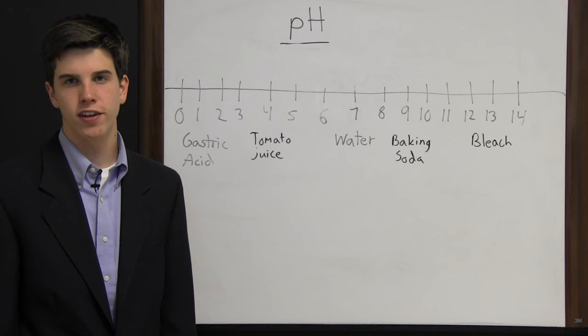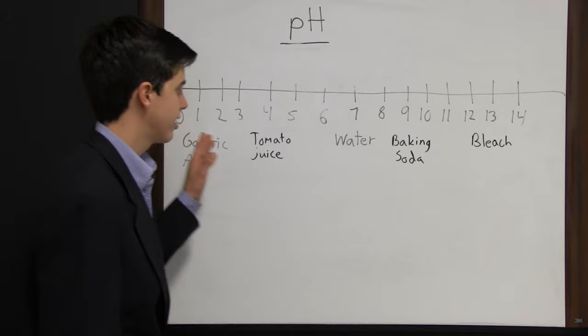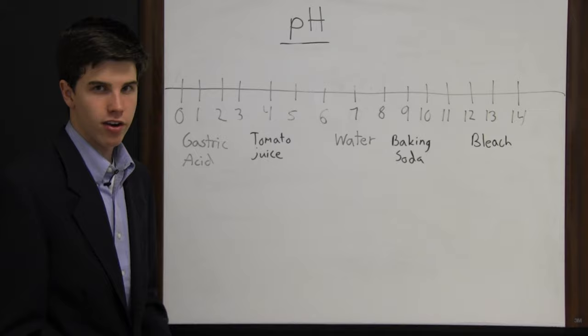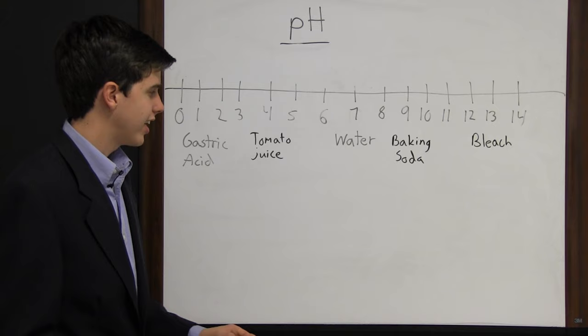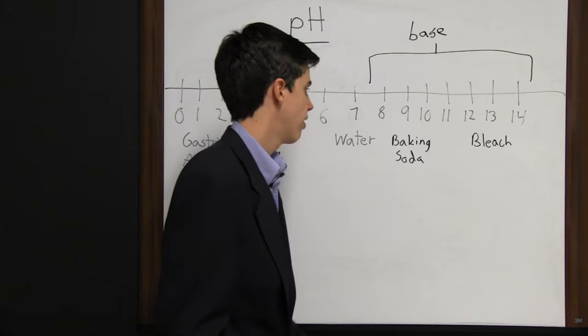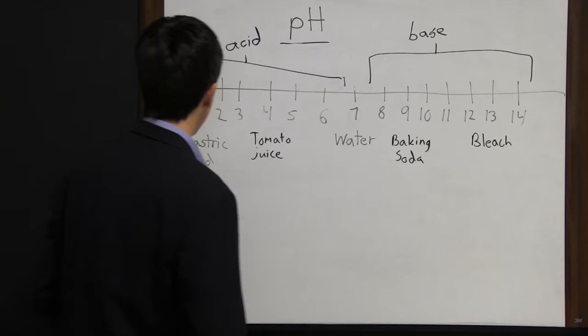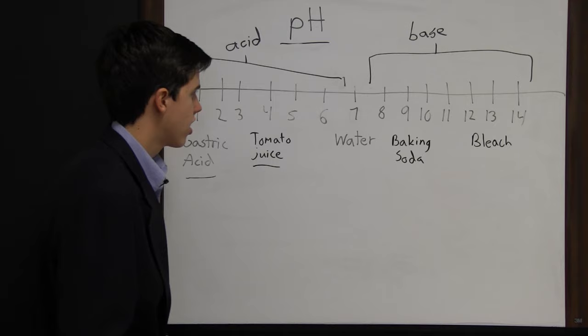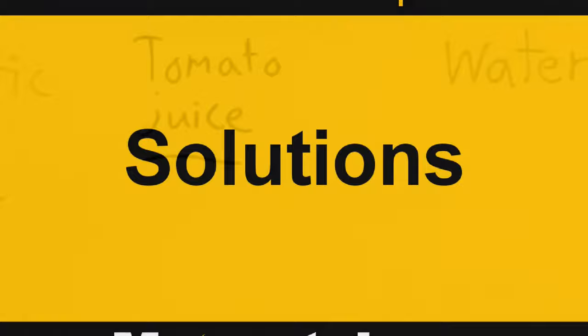pH is a measure of how many hydrogen ions are in a substance, important in biology, chemistry, medicine, food science, farming, and water treatment. On a scale of 0 to 14: water has a pH of 7. Any substance with a pH above 7 is a base (e.g., baking soda, bleach), and any substance below 7 is an acid (e.g., lemon juice, tomato juice, gastric acid).